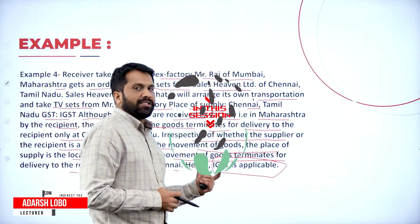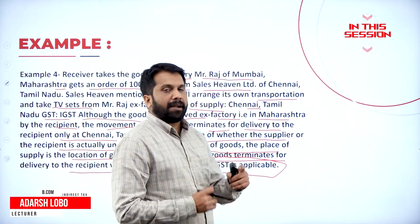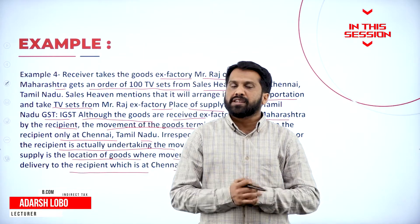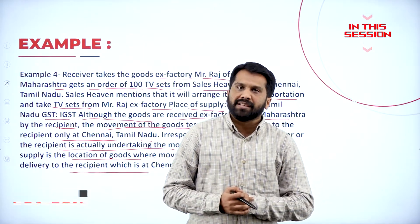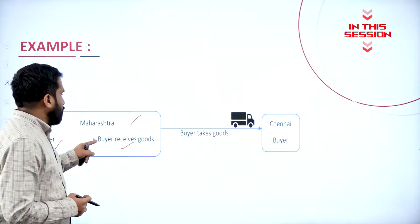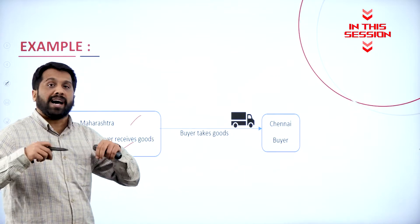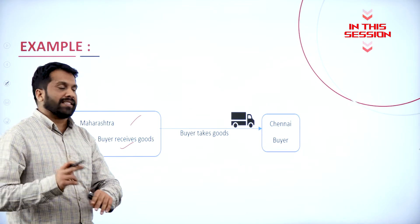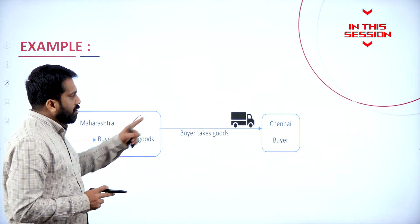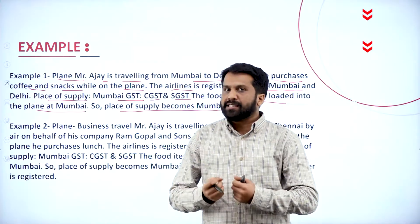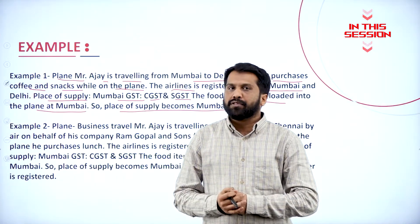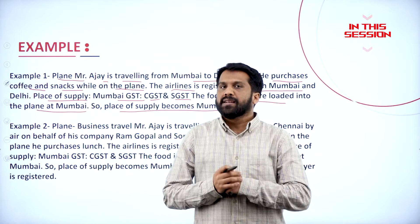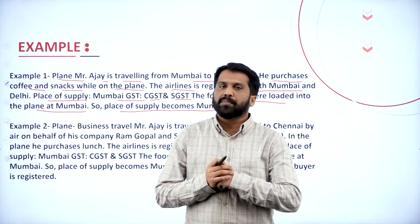The place of supply is in Chennai and Maharashtra — two different states, then IGST will come. Whatever sales happen, even though I am in Maharashtra, the sale is considered as you have sold to Chennai. If you consume any food item, it will be considered as Mumbai only. So place of supply is Mumbai.